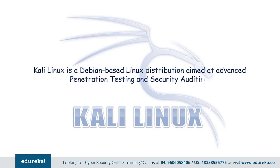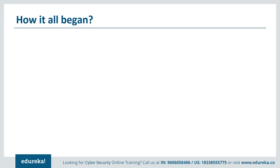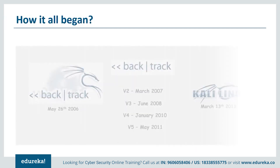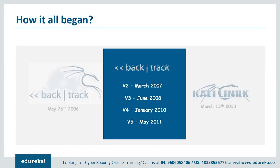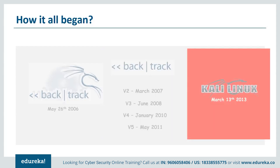Kali Linux was developed by Offensive Security as a rewrite of BackTrack. BackTrack was a Linux distribution focused on security, used for digital forensics and penetration testing. Its first version was released on May 26, 2006, and in subsequent years different versions were released with updates and advanced features. Finally, in March 2013, the Offensive Security team rebuilt the entire BackTrack architecture around the Debian distribution and released it under the name Kali Linux.